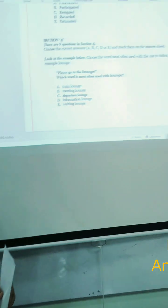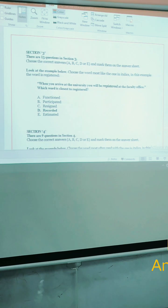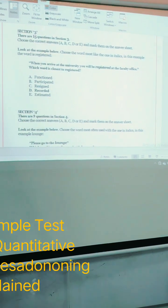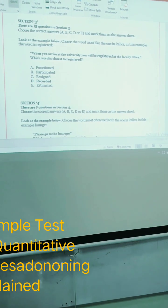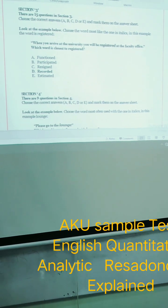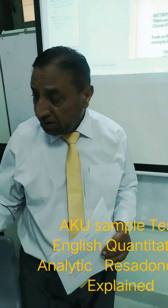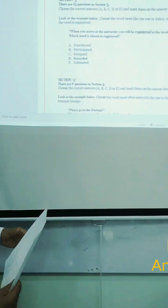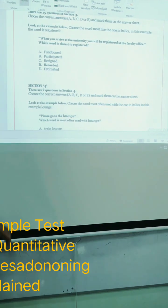Look at question number 3. Look at the example below. Choose the word most like the one in italics. In this example, the word is registered. When you arrive at the university, you will be registered at the faculty office. Which word is closest to registered? It means synonymous. Closest means synonymous or having the same meaning. So from the options, B is registered is closest to recorded.